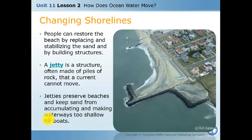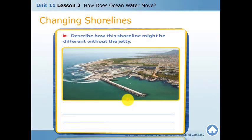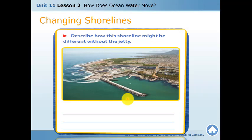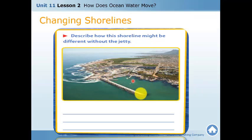Jetties keep waterways from becoming too shallow for boats. When the ocean carries too much sand and deposits it near the shore, boats cannot sail there. That is another reason to preserve beaches with jetties. On page 513, describe how the shoreline may be different without the jetty — remember the jetty preserves the shore from being destroyed or modified by ocean currents carrying or depositing sand.